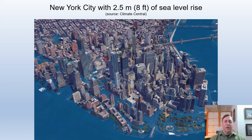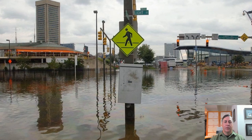And here's what New York City could look like with 2.5 meters of sea level rise, and here's what Baltimore could look like.